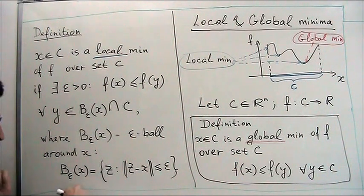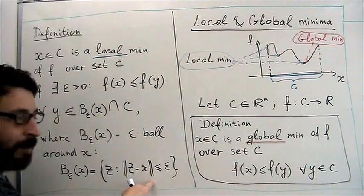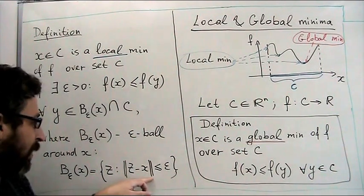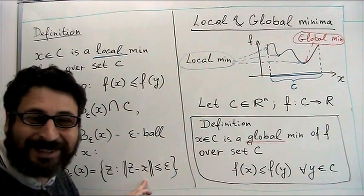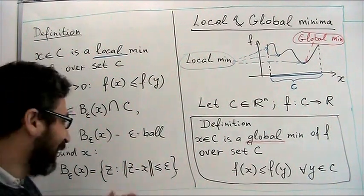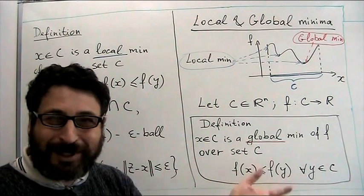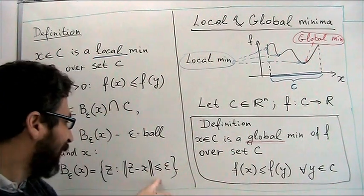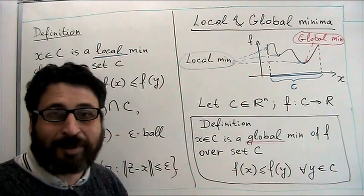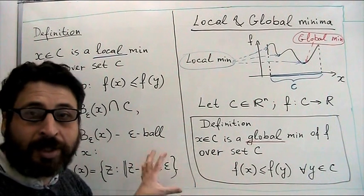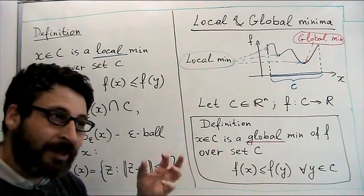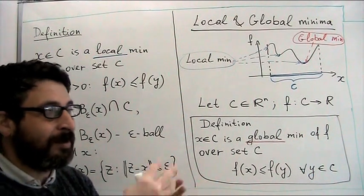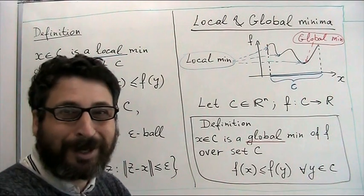Here is just the definition of epsilon ball. Pay attention that it is defined with respect to some norm. There are many various balls — the most typical is the Euclidean norm, an L2 ball. But you can use other norms, and actually the definition is equivalent: if x is restricted in one norm, it is also restricted in all other norms.